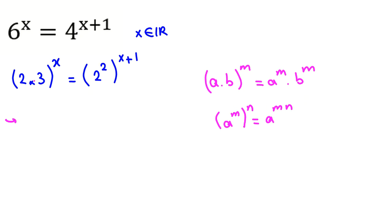If we apply them here, it will be fine. Applying the first one, 2 to the x times 3 to the x equals 2 to the 2 times (x plus 1), which is 2x plus 2.